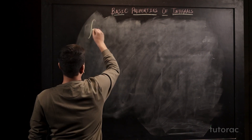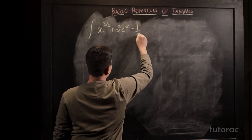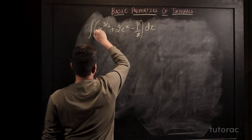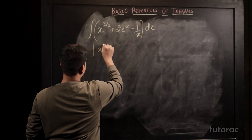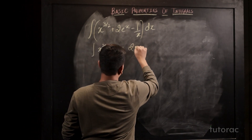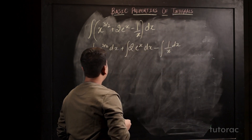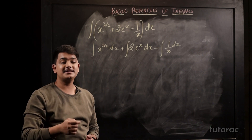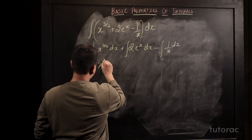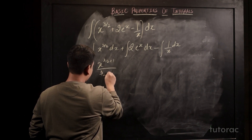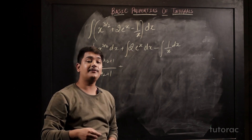Now let us see the last example. Suppose the function is x^(3/2) + 2eˣ - 1/x dx. First, we split the integral over each function, giving us the integral of x^(3/2) dx plus the integral of 2eˣ dx minus the integral of 1/x dx. For x^(3/2), using the power rule, we get x^(3/2 + 1) / (3/2 + 1).